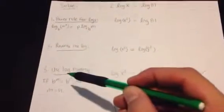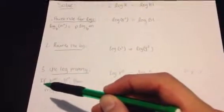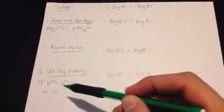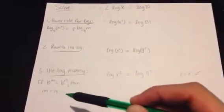So, if you do that, you can use the log property: if b raised to m is equal to b raised to n, then m is equal to n.